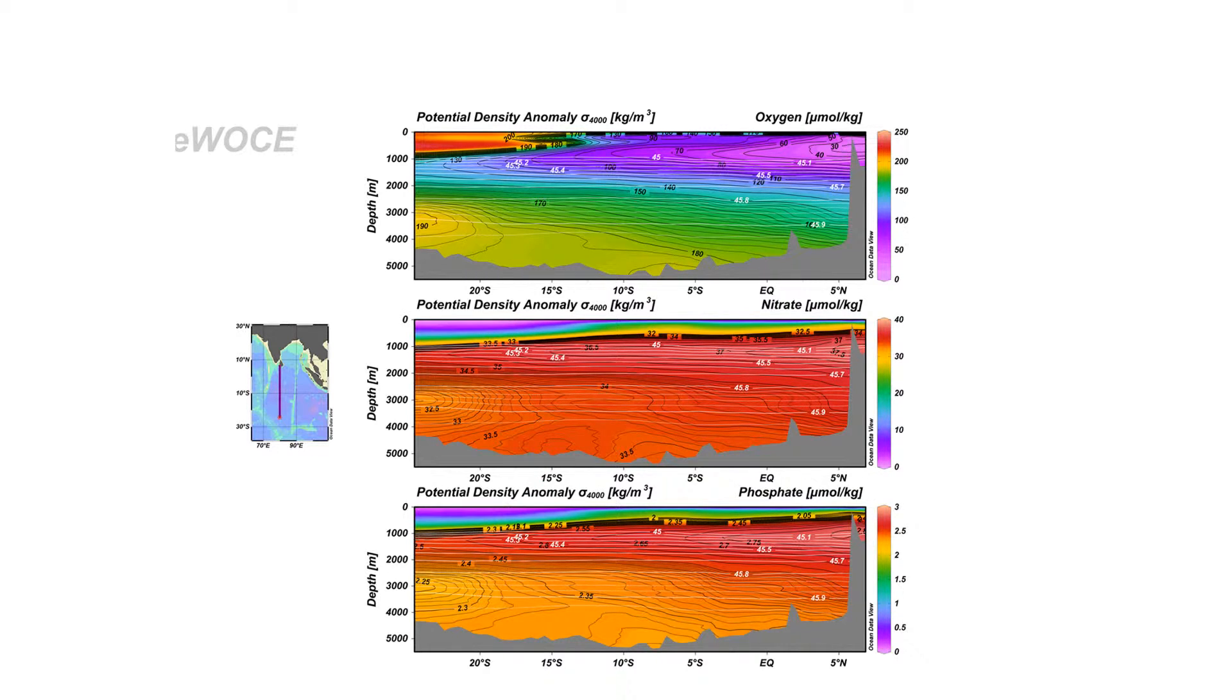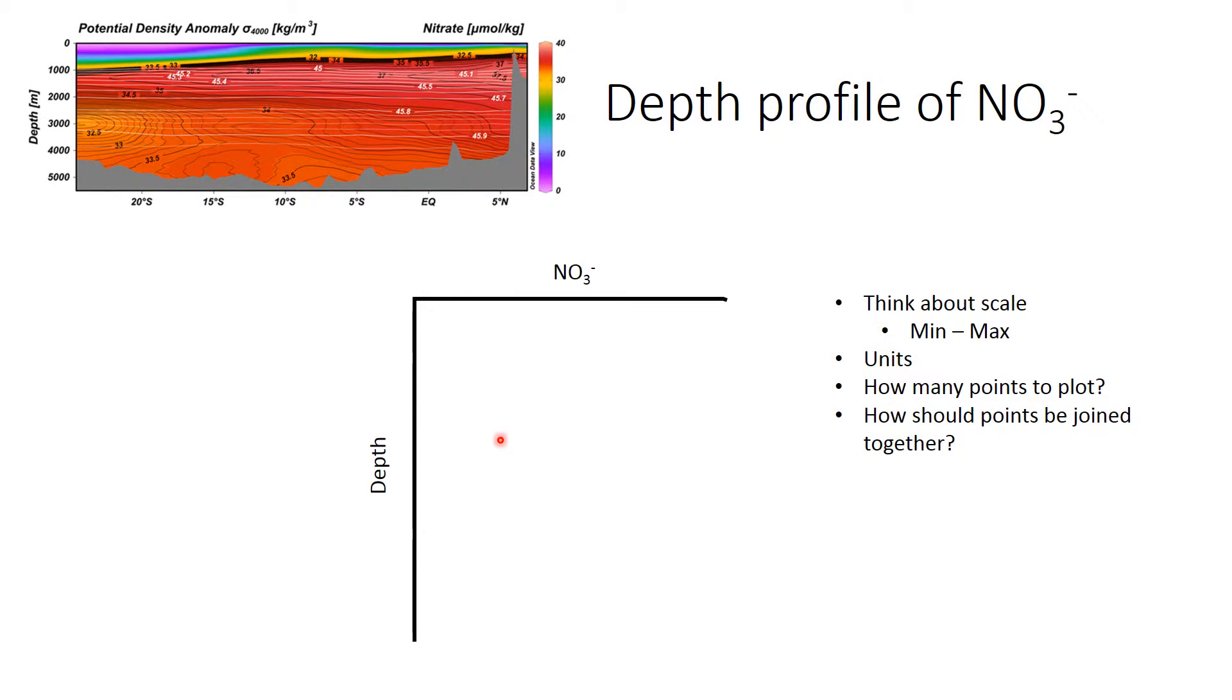The first exercise is to take a slice through your section at 20 degrees south. Plot what you think the concentration of nutrients will be at depth. Start at zero at the top and some depth down, so put depth on a reversed scale, very much like it is in the sketch section here, increasing in numbers as you go down. Then think very carefully about your horizontal scale—what's the maximum and minimum nutrient concentration.